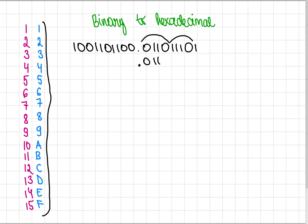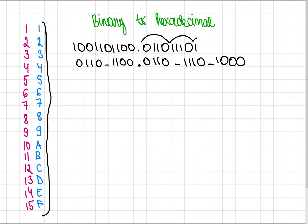So: 0, 1, 1, 0, 1, 1, 1, 0. And then we have 1 and we just add 3 zeros. And here as well: 0, 0, 1, 1, 0, 1, 1, 0. And we have 0, 1 and we just add 2 zeros.